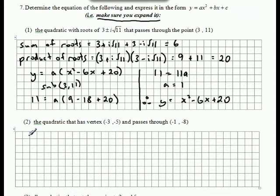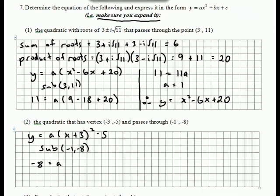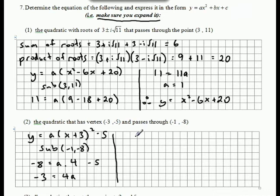The next one: we have a vertex, therefore we use the turning point form. So we'd have y equals a times x take negative 3 all squared, then take 5. Once again, we substitute our point to work out the value of a. When we substitute x equals negative 1 we end up with 2 squared, which is 4. Remember BEDMAS — the 4 and the a are multiplying. Move the 5 across, it adds. We end up with negative 3 equals 4a, and dividing gives a equals negative 3 quarters.